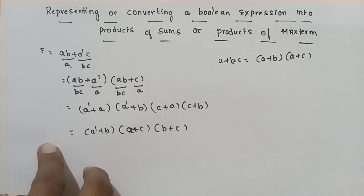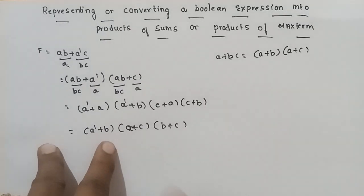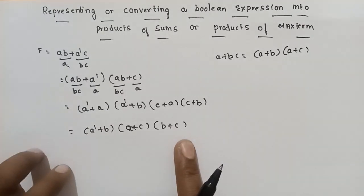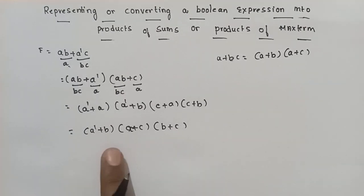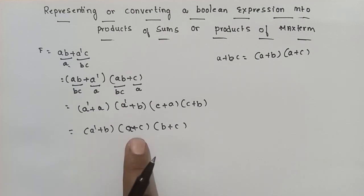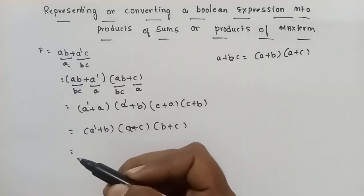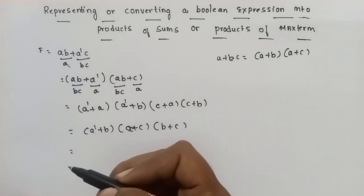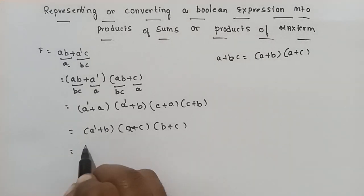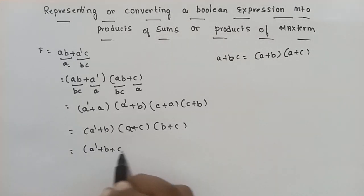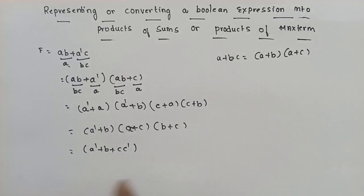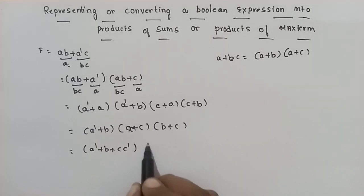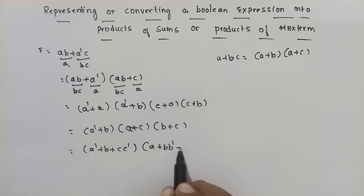The canonical Products of Sum form requires every maxterm to contain every variable of the function. We have missing variables — no c-dash, no b, no a-dash here. We will add the missing terms: a plus b, b-dash, c.